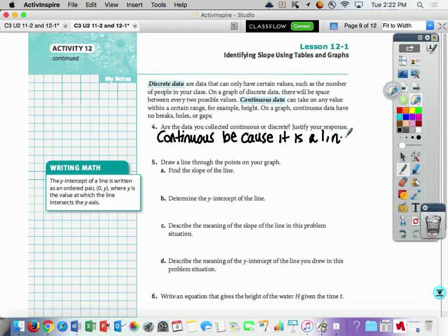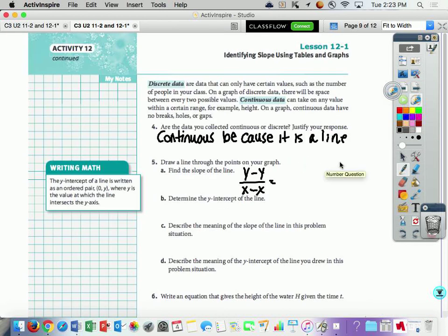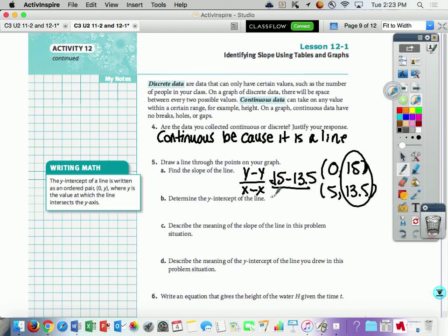All right, draw a line through the points on your graph. We did that. Find the slope of the line. So again, you find your slope by doing y minus y over x minus x. Okay, I'm going to take two points. We'll do 0 and 15 and 5 and 13.5. So we did 0 and 15, 5 and 13.5. So that's going to be our y's first. And then our x is our bottom. Okay, 15 minus 13.5 is going to give me 2.5. 0 minus 5 is going to give me negative 5.